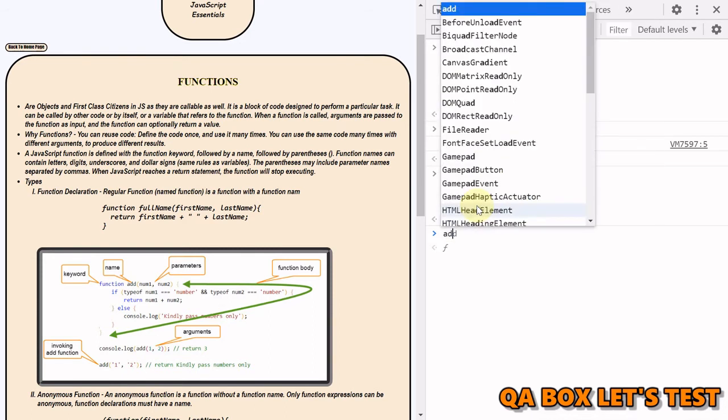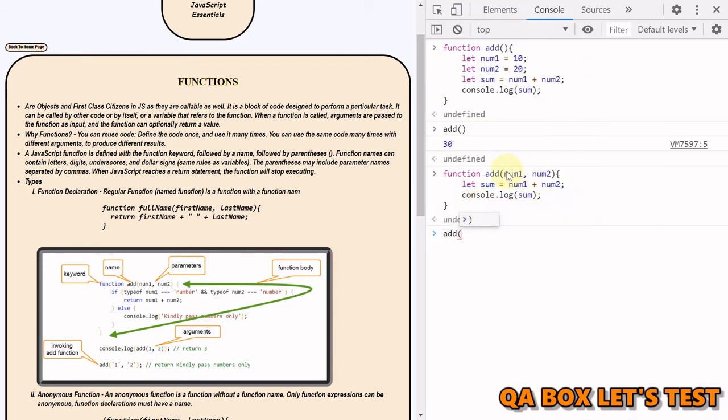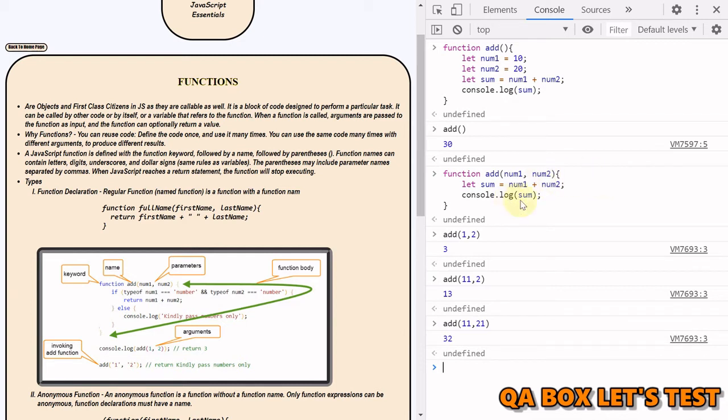Now if I invoke this function, I have to provide these parameters. So I say one and two, I invoke this, I get three. I can again invoke this with different values, I get 13. So I can keep on invoking this as many times as I want.